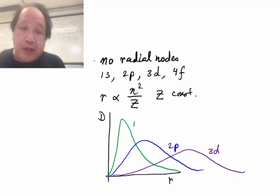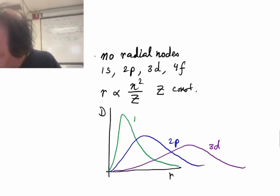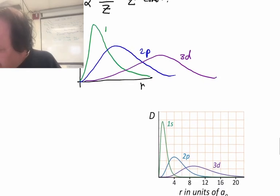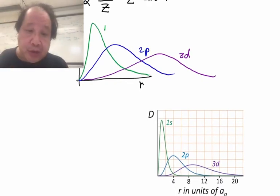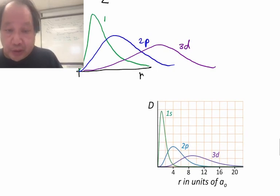And so qualitatively, this is what we would expect. And we can compare that for the hydrogen atom. Here are the actual d-functions. Just as we expected, they are in the order as shown.